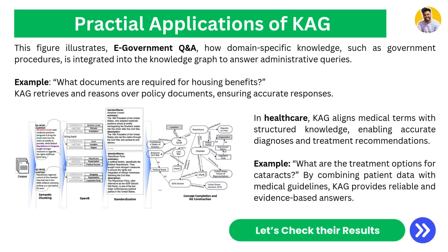In practical applications, CAG is used in e-government for Q&A tasks. In a domain-specific environment, CAG learns from the data, builds relationships between data points, and gives context-aware, logically reasoned answers. For example, asking what documents are required for housing benefits returns all policy-related documents and eligibility criteria. It can also be used in healthcare to ask about treatments, medical conditions, and symptoms.